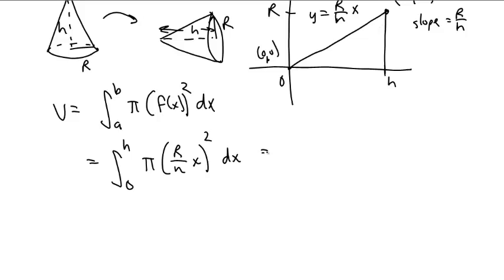And what do we get? We get the integral from 0 to h. The pi can go out front. The r squared over h squared can go out front.